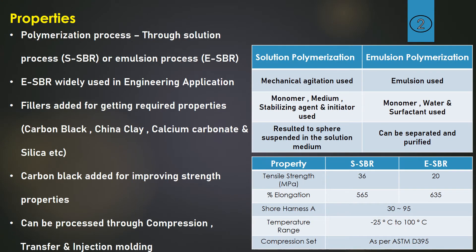There are two types of polymerization processes followed in SBR. One is through the solution process, which is called SSBR, and through the emulsion process, which is called ESBR. ESBR is widely used in engineering applications.